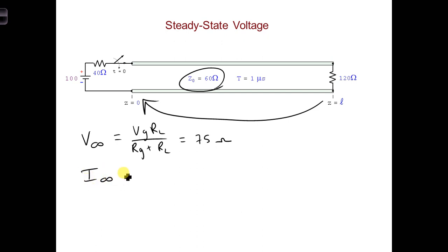So the steady-state current is VG over RG plus RL, and that's 0.625 amps.